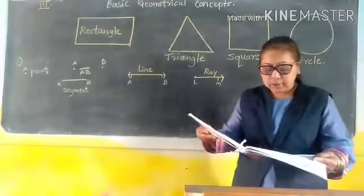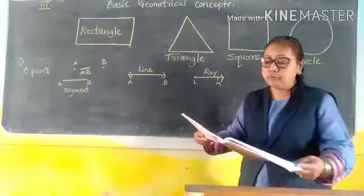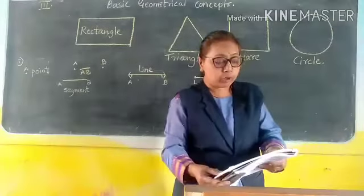Now, the last one is circle. A circle has no sides and no vertices. Now, they have given. Give one example of each of the following.